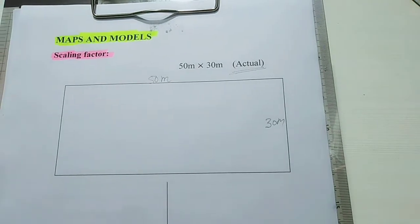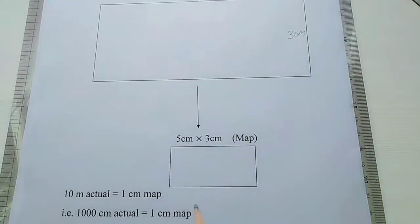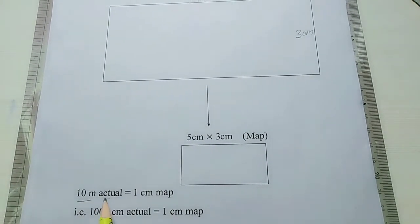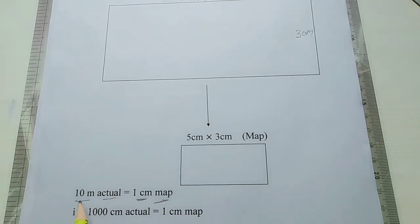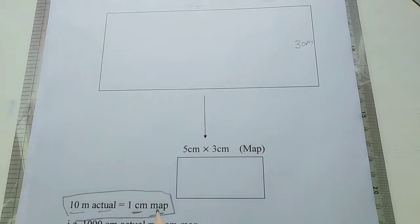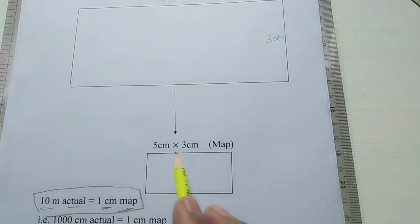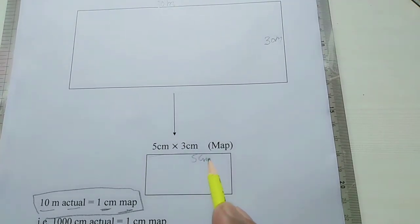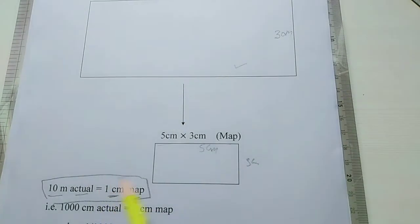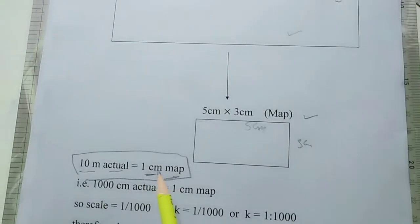Suppose you want to draw a map or a drawing of this plot, and you have taken a scale assuming that 10 meters in actual equals 1 centimeter on the map. So for 50 meters you are drawing a length of 5 centimeters, and for the breadth of 30 meters you draw 3 centimeters. So to show your plot on the map, you have chosen the scale: 10 meters actual equals 1 centimeter on map.